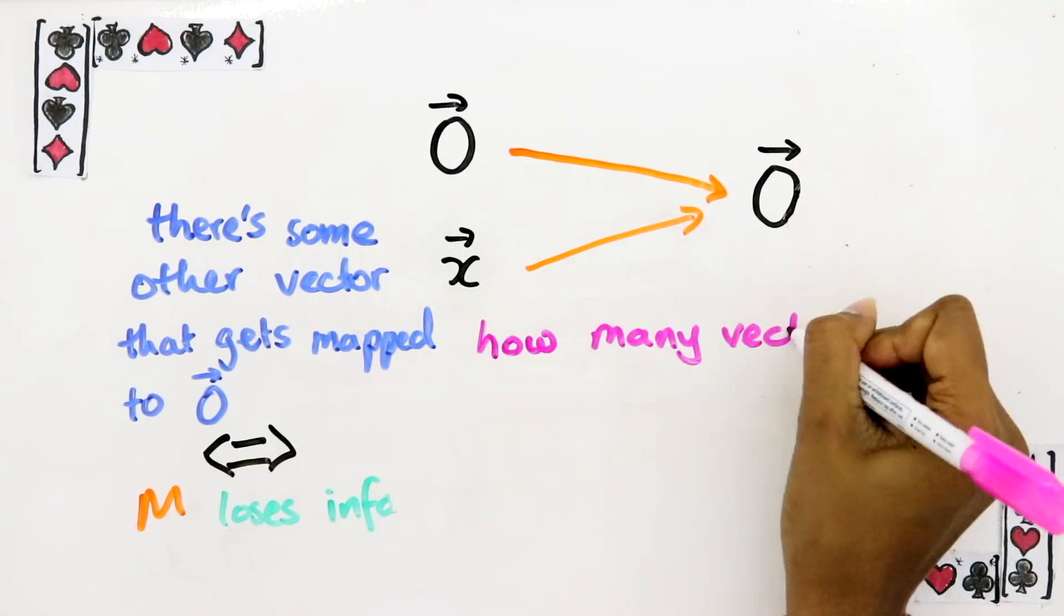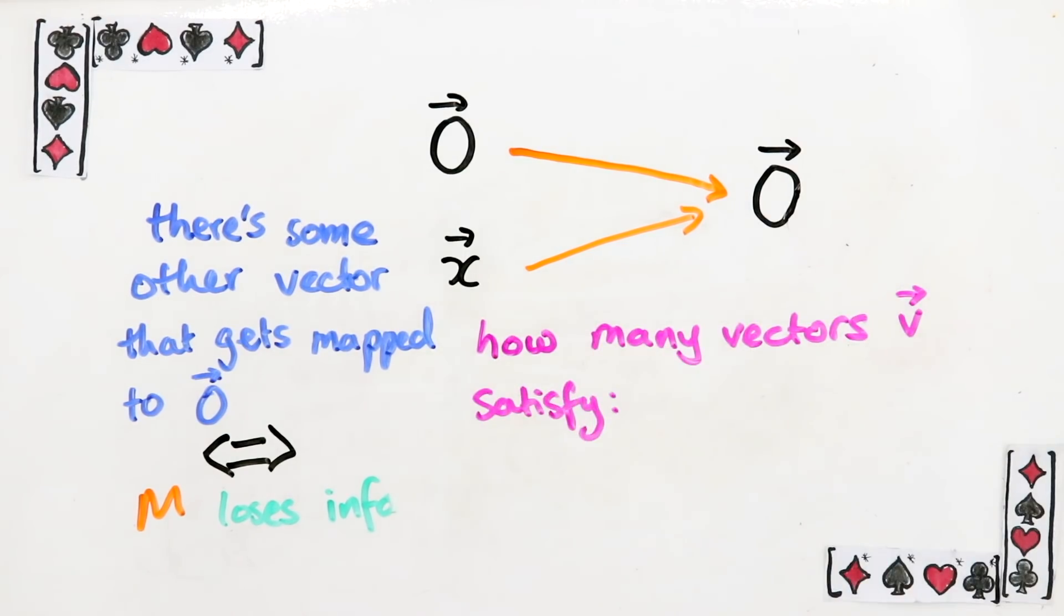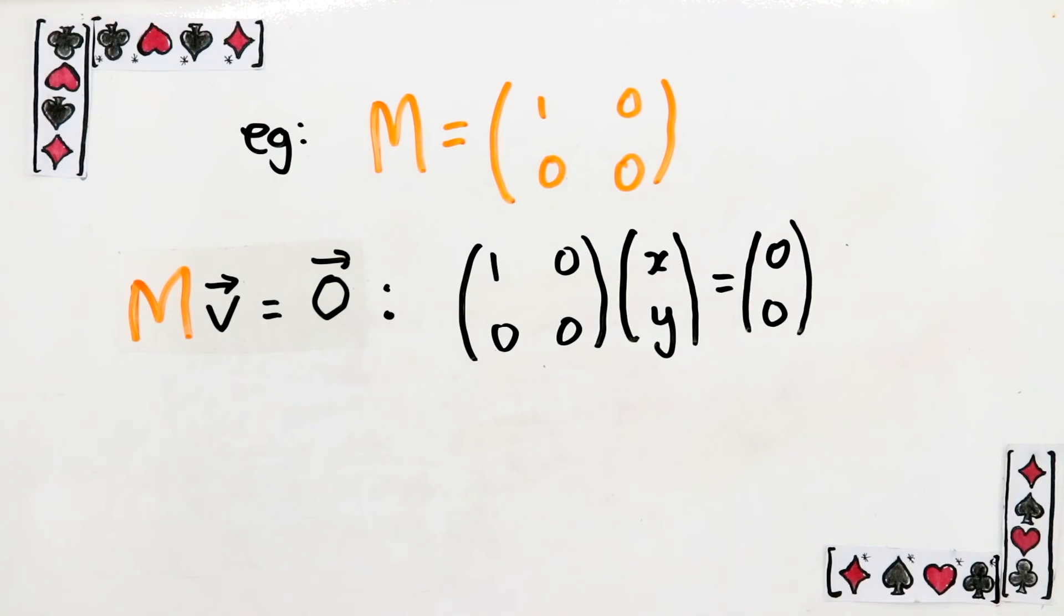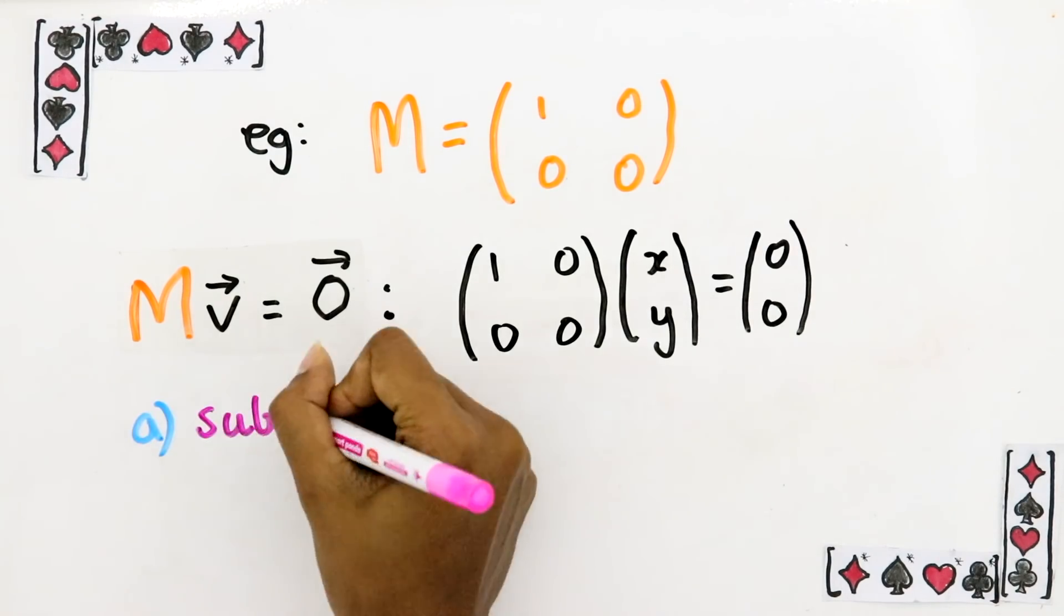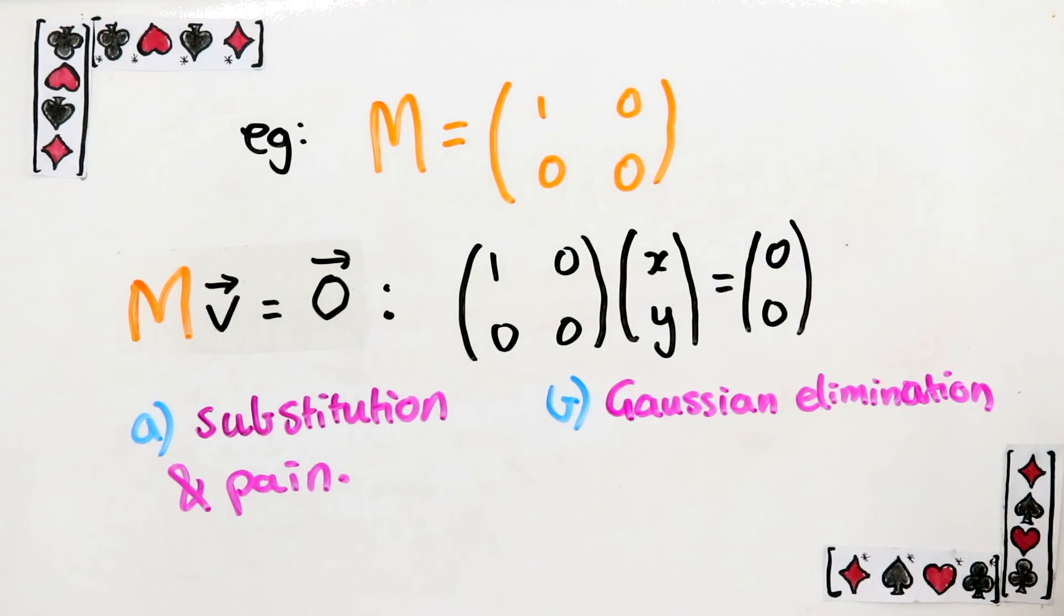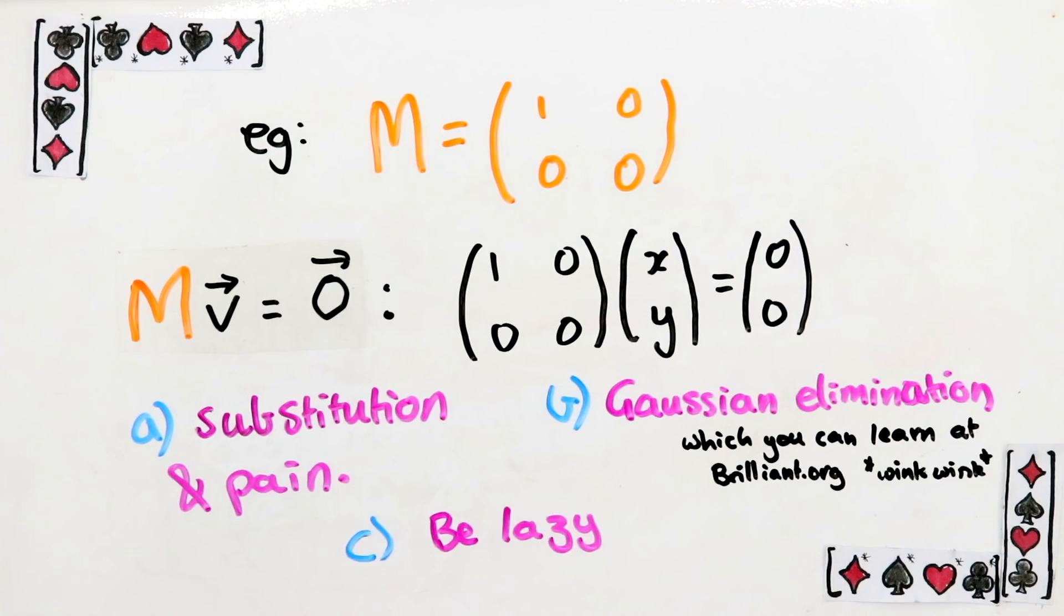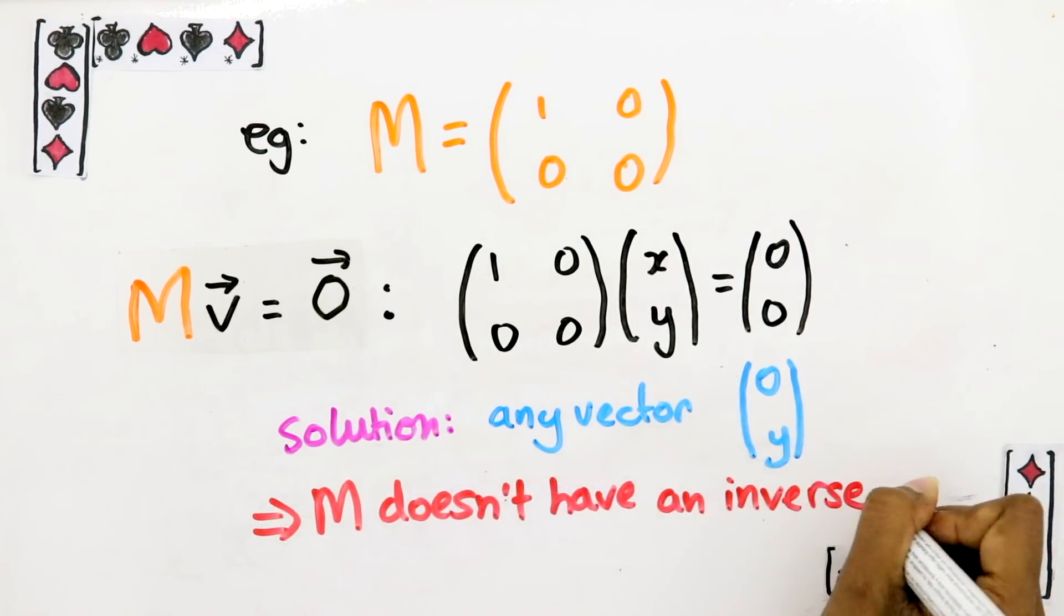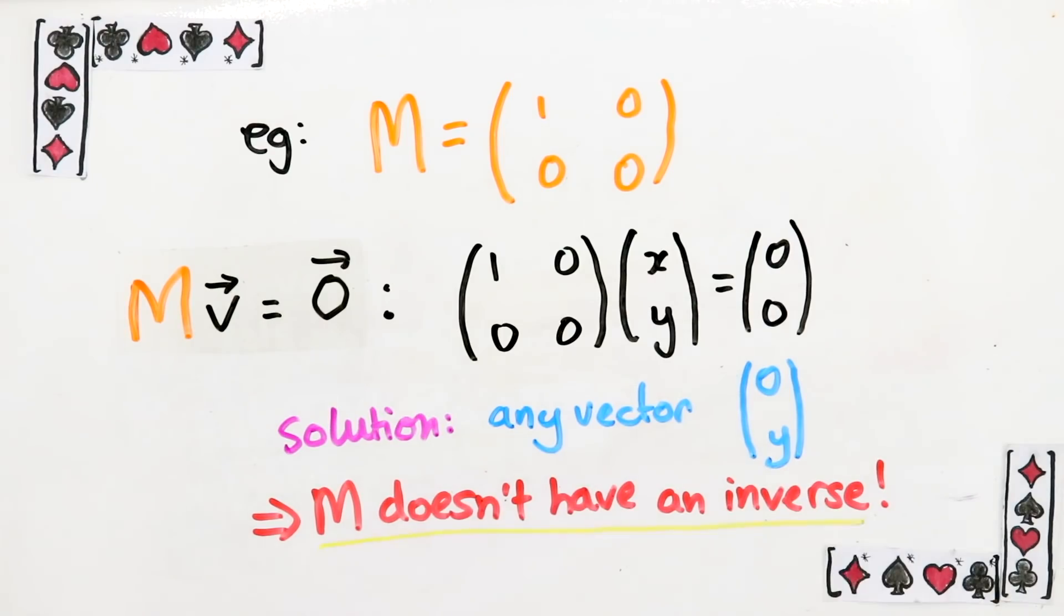In other words, figure out how many vectors V satisfy the equation M V equals 0. This is part of why you spend so much time in a linear algebra course studying the solution to equations like this. You can solve for V by a using substitution, b using Gaussian elimination, or c getting your computer to do the Gaussian elimination for you. The point is, you can find out if M loses information easily enough this way, and that tells you whether M has an inverse.